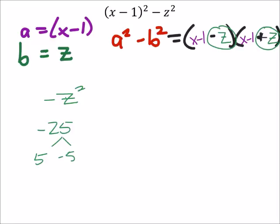So when we foil this thing and we multiply those two, we still end up with a negative z².